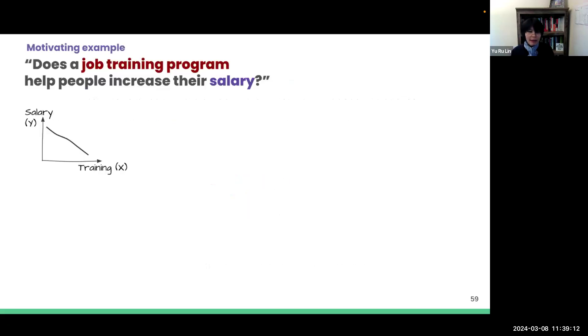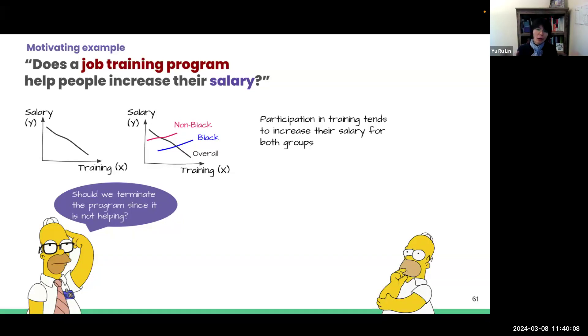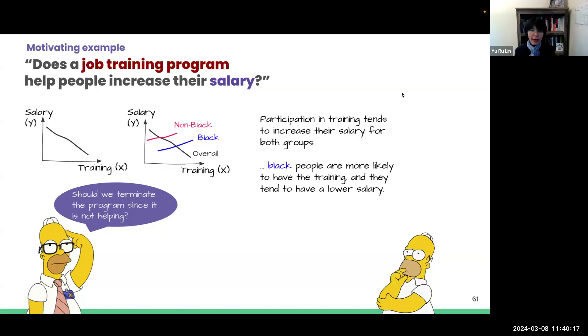For example, suppose a policy or decision-maker wants to know, does a job training program help people increase their salary? So the observational data shows that the relationship between participating in a job training program and people's salary is negative. So the decision-makers may think, should I terminate the program since it's not helping? However, later, someone found that if you look at the Black and non-Black people separately, we found that participating in the training has positive relationship with increased salary for both groups. And the reason for the overall trend is possibly that Black people are more likely to participate in training and they tend to have lower income. So ethnicity seems to bring the confounding effect.